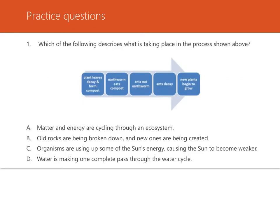Let's do some practice questions. Number one: which of the following describes what is taking place in the process shown here? It shows plant leaves decay and form compost, then an earthworm eats the compost, ants eat the earthworm, the ants decay, and new plants begin to grow. Look that over, pause it, and see what you think.